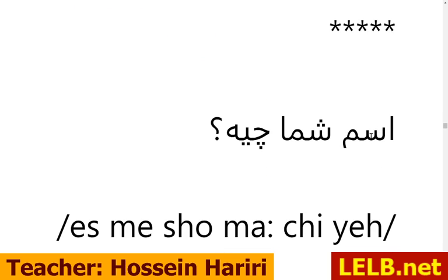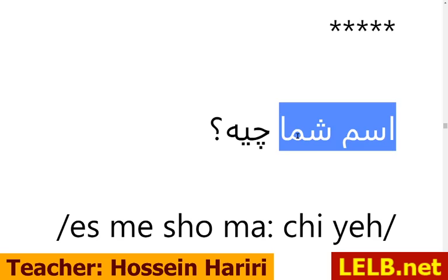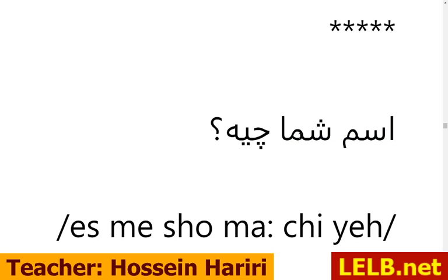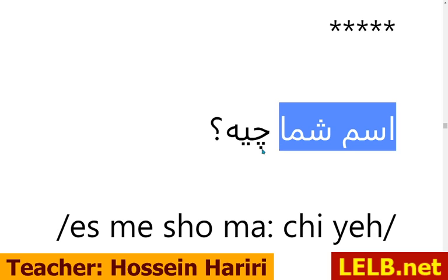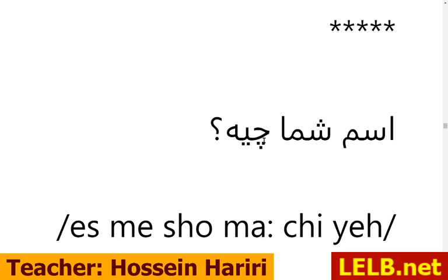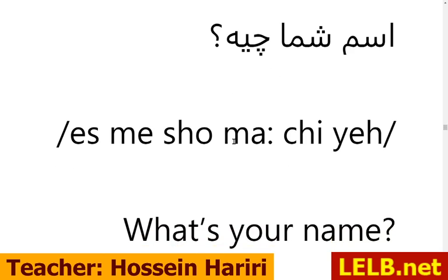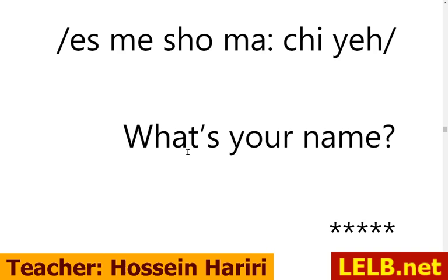اسم شما چیه؟ — اسم شما means 'your name,' where شما is a possessive adjective. چیه means چی است, meaning 'what is.' So اسم شما چیه؟ means 'what's your name?' Use this to ask for somebody's name.